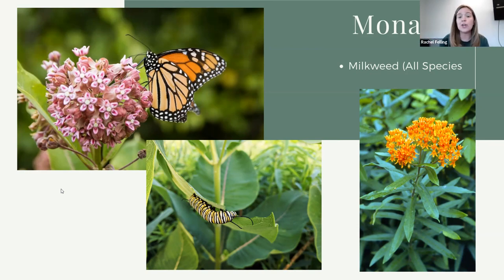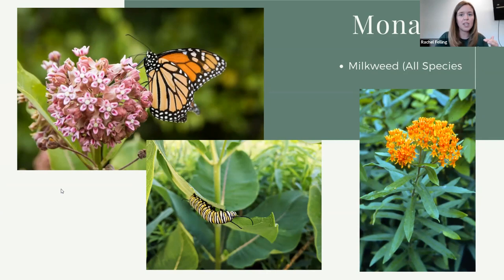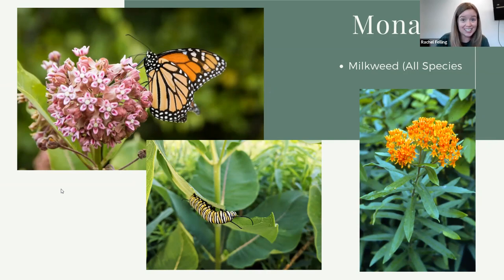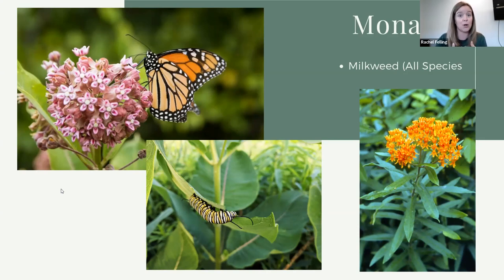Some homeowners don't love common milkweed because it's so big and tall and will spread — just cut it back if needed. If you're looking for a smaller species, butterfly milkweed has a smaller, more narrow leaf, does not grow as tall — probably two to three feet — and provides the same hosting benefit. It flowers and is a good nectar plant as well. There's also swamp milkweed, which, as the name suggests, grows in wet areas and can be a good solution if you have an area around your home that gets wet.